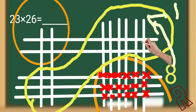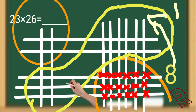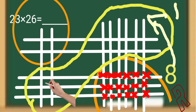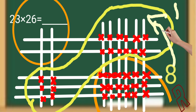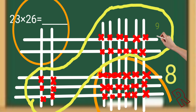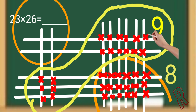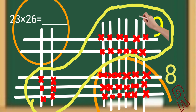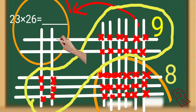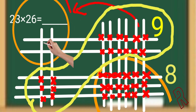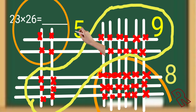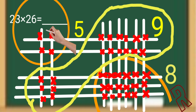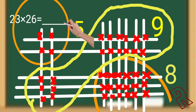The middle section: count 1, 2, 3, 4, 5, 6, 7, 8, 9, 10, 11, 12, 13, 14, 15, 16, 17, 18, plus the carry of 1, gives 19. Again only write the units digit 9 here and carry 1 to the next section. The top section has 1, 2, 3, 4 intersecting points plus 1 carry, giving 5. Writing from top to bottom: 5, 9, 8 — so the answer for 23 × 26 is 598.